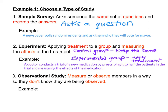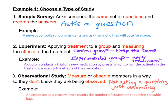Our final type of study is called an observational study. This is the least invasive because we don't actually have to ask anybody a question. You just measure or observe members in a way so they don't know they are being observed — you're not asking a question, you're just observing. An example would be an employee at a grocery store who counts the number of customers that bring reusable bags. This can easily be done without asking the customer anything. We can record the data without polling or asking any sort of question.